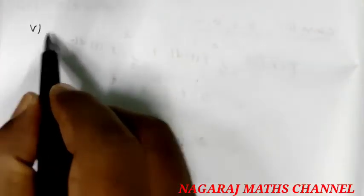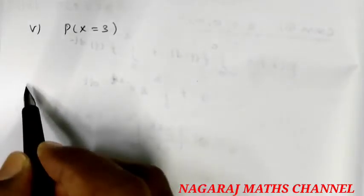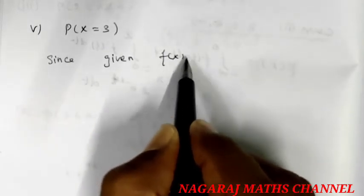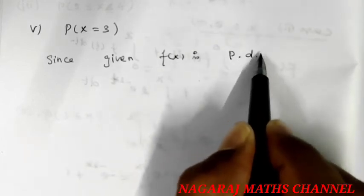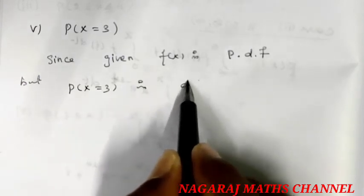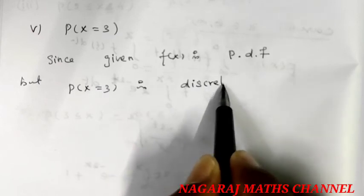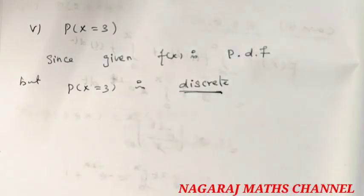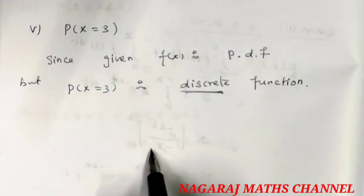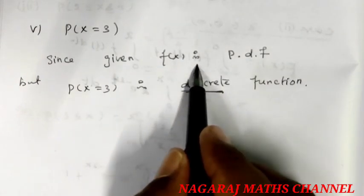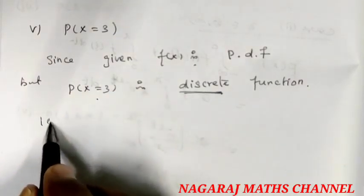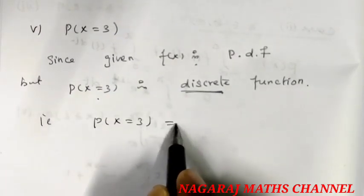Therefore, the probability of x equal to 3: since f of x is a probability density function — a continuous case — P of x equal to 3 is discrete. In the continuous case, P of x equal to 3 equals 0. Thank you.